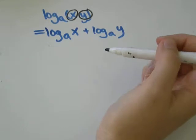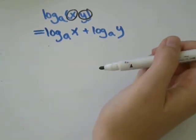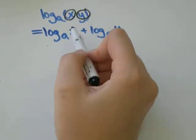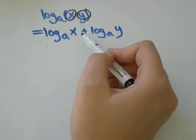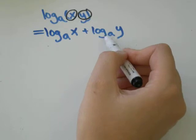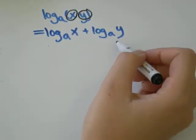In this case we've got an x and a y being multiplied, so we would separate them into two different logarithms. The first one would be log to the same base from the question of whatever the first thing was in your brackets, and then you add on the logarithm to the same base as the question of whatever the second thing is in your brackets.